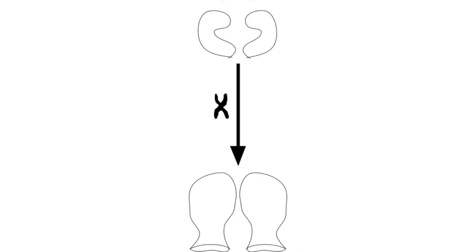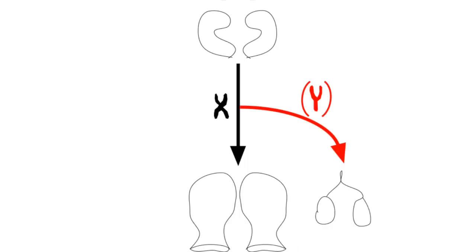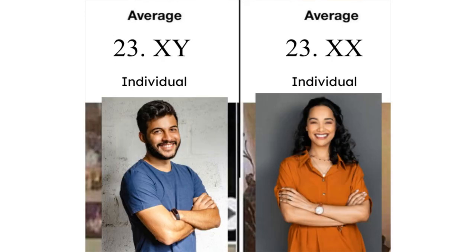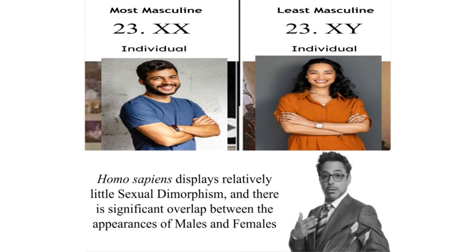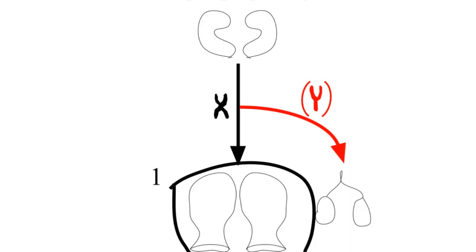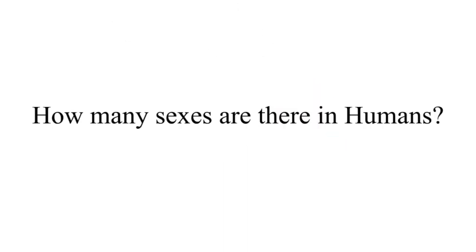When you first develop from the meeting of two gametes, you have regular basic gonads. Your X chromosomes will develop those into advanced gonads, and your Y chromosome, if you have one, will turn them into testes. Sex glands have a lot of other effects, but a lot of other things also have those effects, so we focus on the gametes. So humans, like all other mammals, only have two sexes — but that wasn't the question.